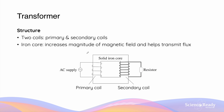Electromagnetic induction forms the basis of how transformers work. A transformer consists of two sets of coils — primary and secondary coils — and these coils share a common iron core.